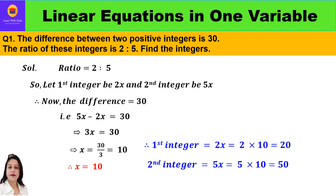The first question is: the difference between two positive integers is 30, and the ratio of these integers is 2 is to 5. Find the integers. Whenever we have to solve such questions related to integers and a ratio is given — like here, the ratio is 2 is to 5 — we shall start the solution with the ratio.